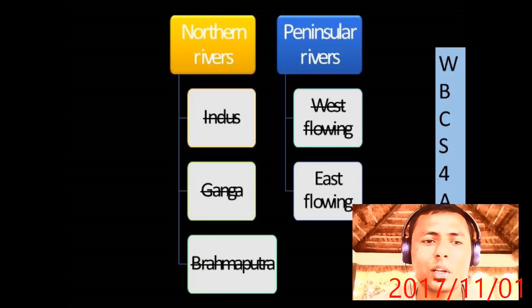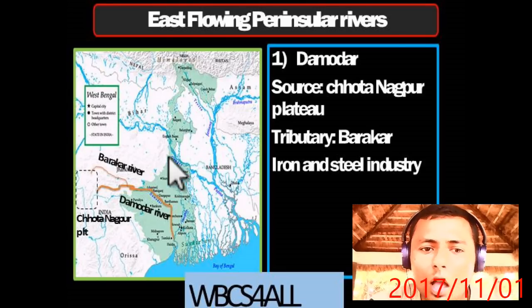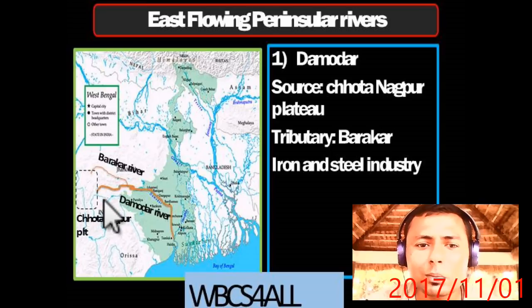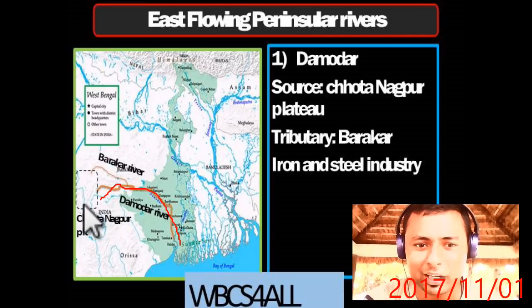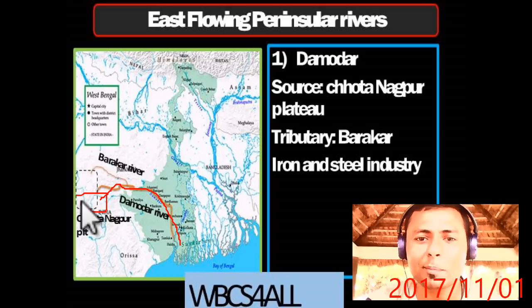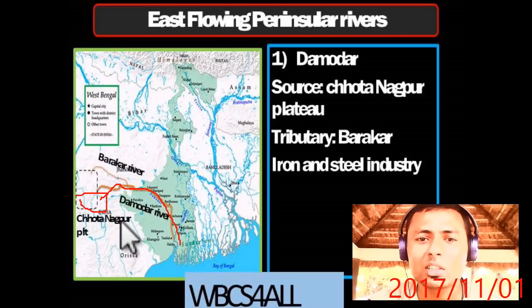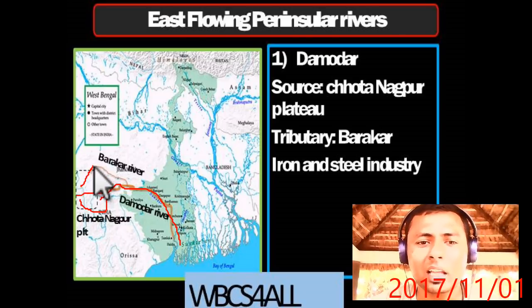Now let's come to the most important part — the east-flowing rivers of India. The Damodar River originates from the Chota Nagpur Plateau. Its source and tributaries include Barakar, and iron and steel factories are located on it.